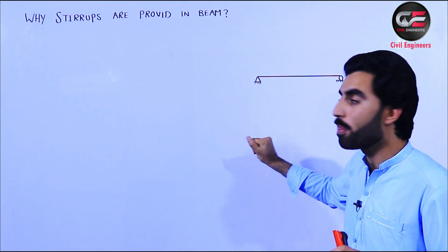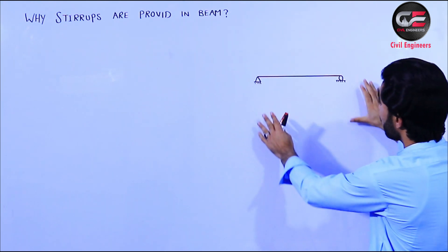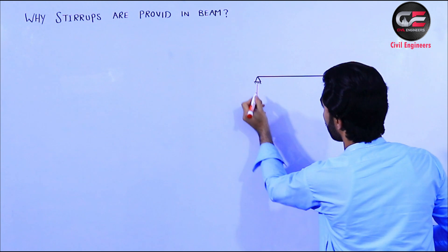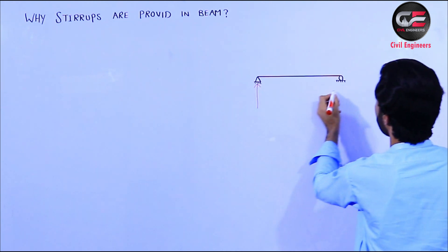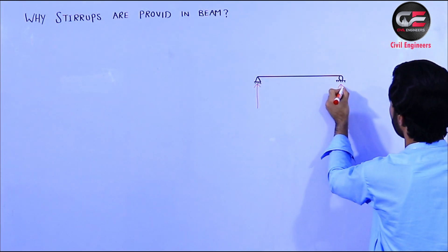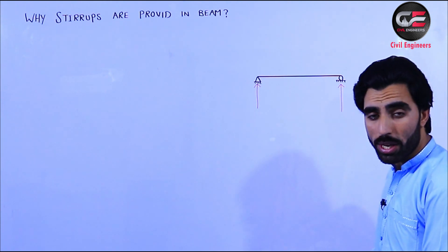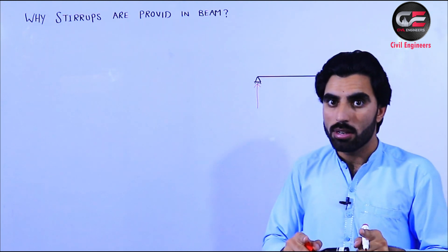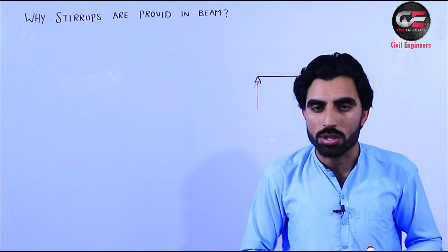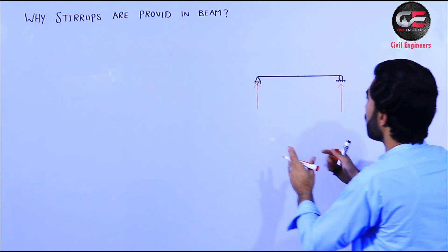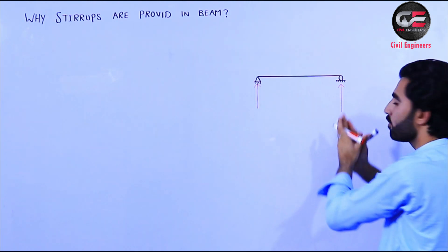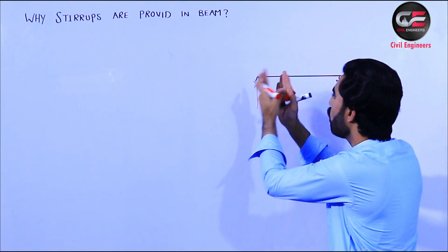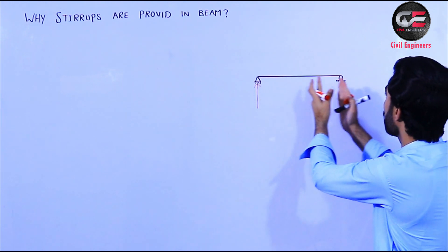The topic is: why are stirrups provided in a beam? You can see this is a simply supported beam - here we have one support and this is the second support. The reason that we provide stirrups in a beam is shear force, because shear force is maximum at the end of the support - maximum at this support point and also at the other point.